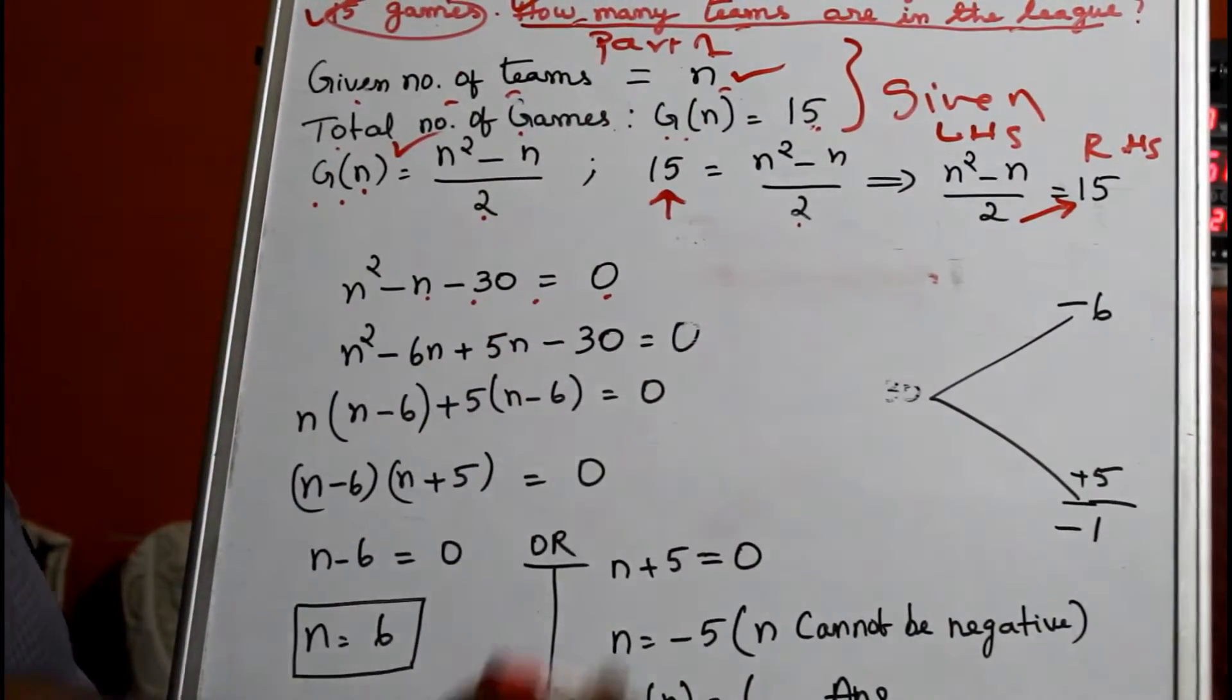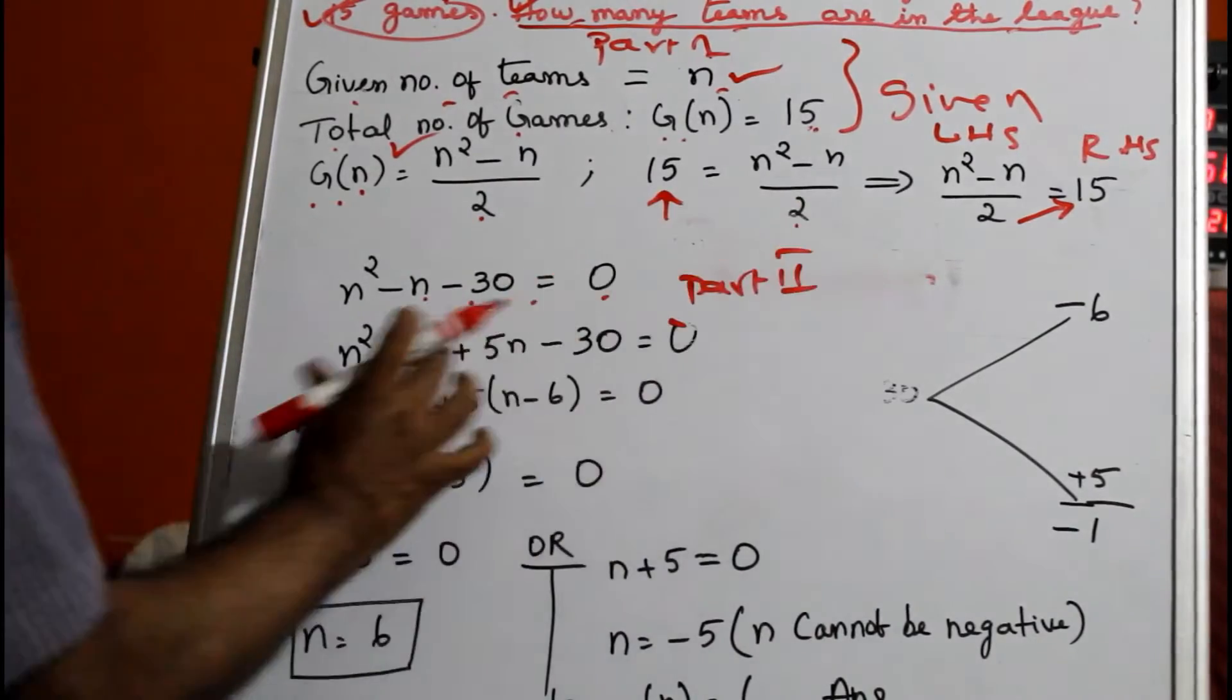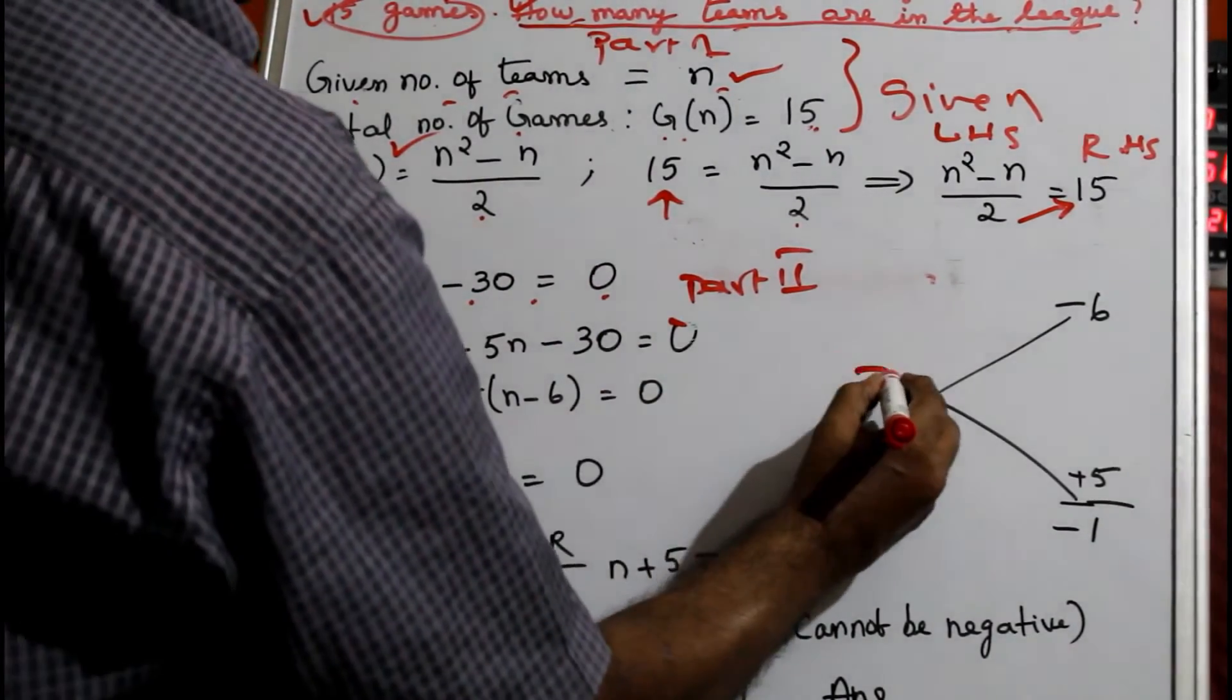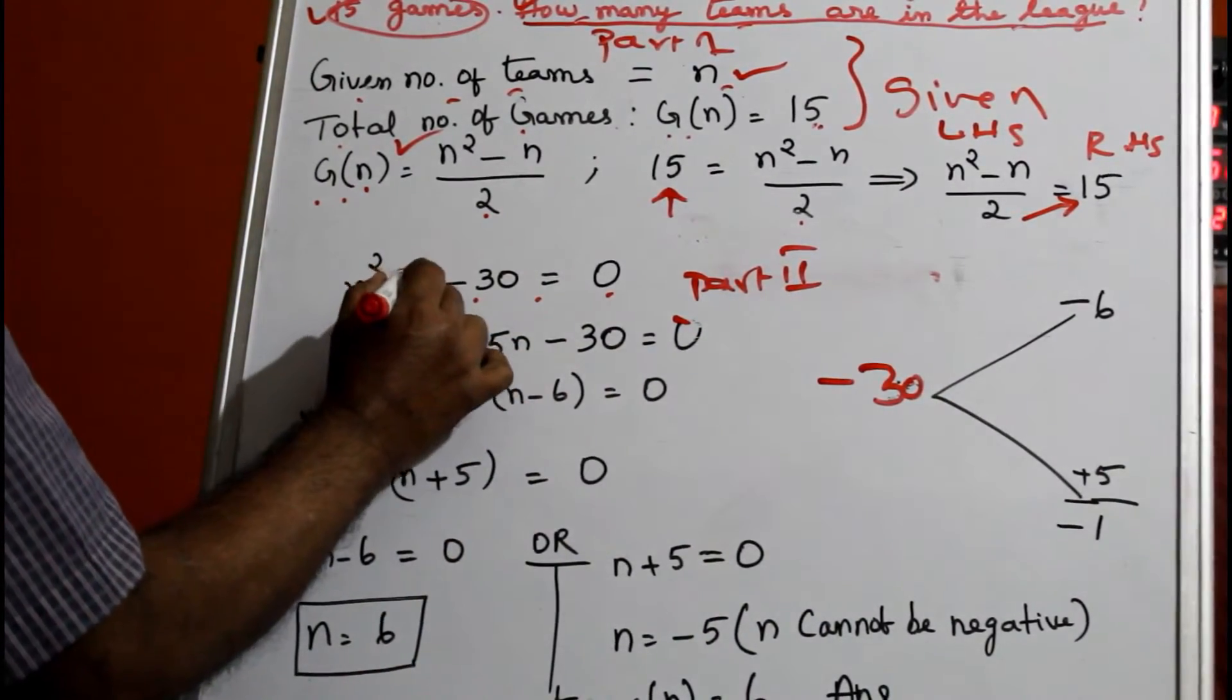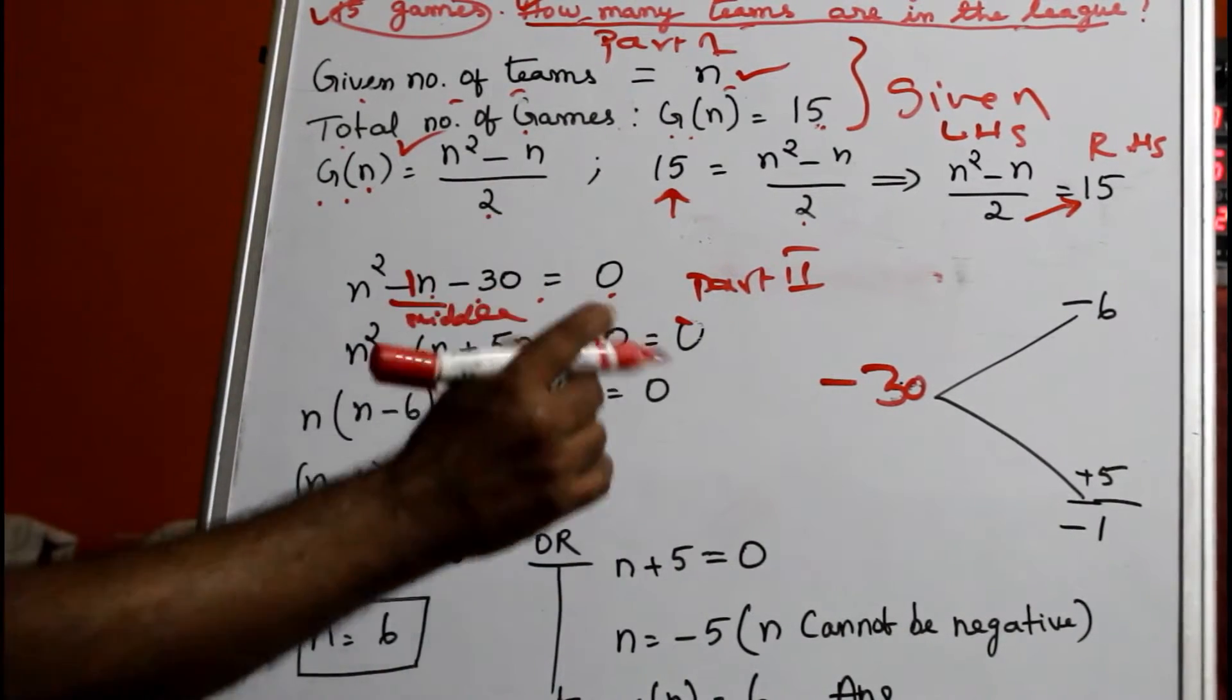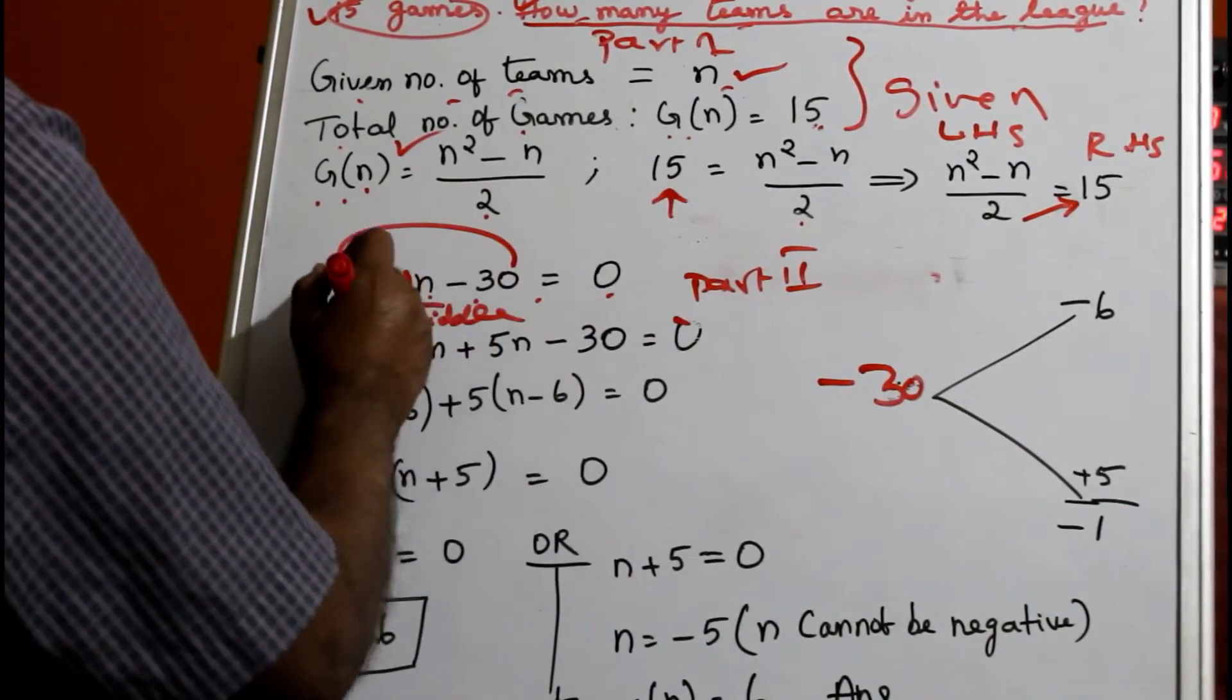Now this is Part 2, where you have to split the quadratic equation. The number is -30 and this is -1 here; this is the middle term. I told you it's called splitting the middle term. So minus 1 you put here.